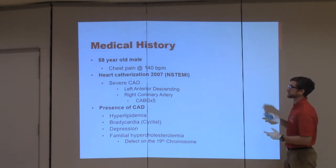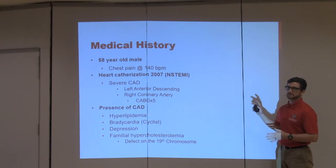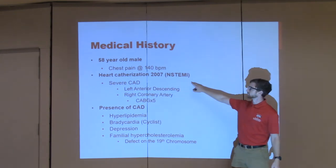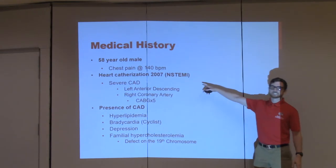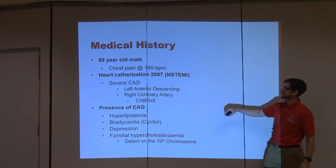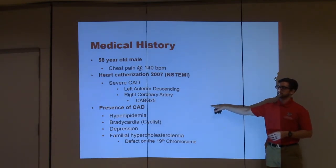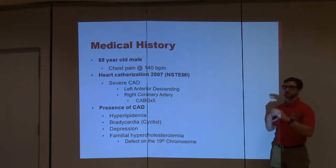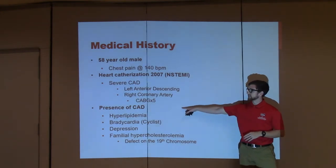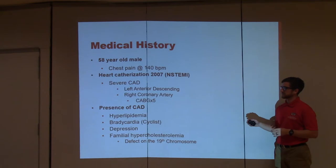Now let's get into the case study. This is someone I got to work with in 2018. He's a 58-year-old male who came to the hospital in 2018 with chest pain at 140 beats per minute. In 2007, he was having a heart catheterization and had a non-ST segment elevation myocardial infarction. They found severe coronary artery disease — left anterior descending, right coronary artery — and he ended up having a five-way bypass. They attached the saphenous vein above and below the blockage five times, which is just extreme. High presence of coronary artery disease.